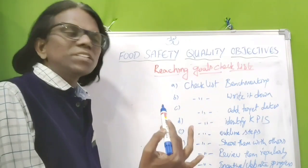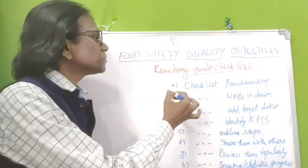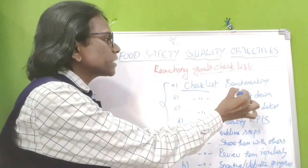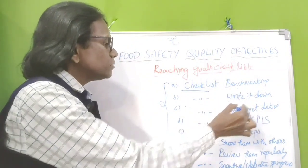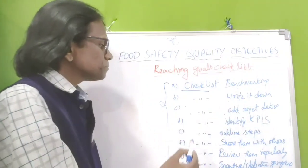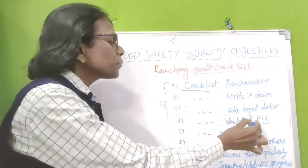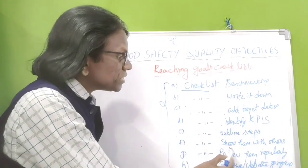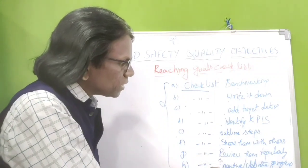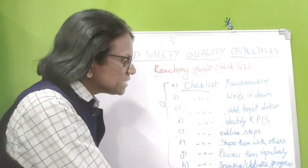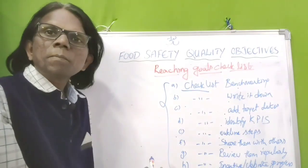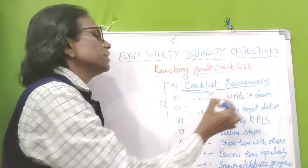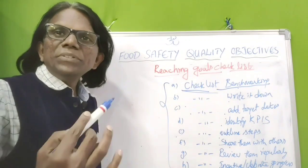Once you set the goal, you have to prepare a checklist to achieve it. The checklists include: benchmarking, write it down, add target dates, identify key process indicators, outline steps, share them with others, review them regularly, and incentives to celebrate progress. Let us discuss benchmarking first.